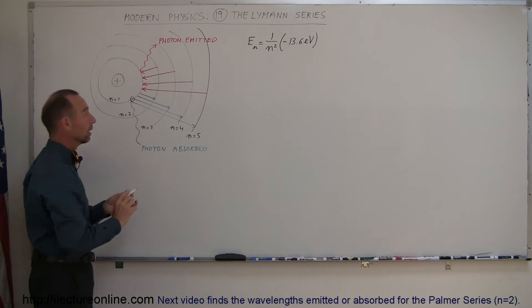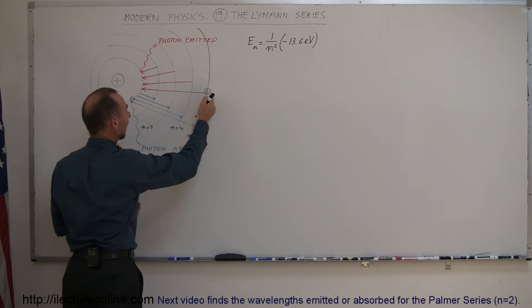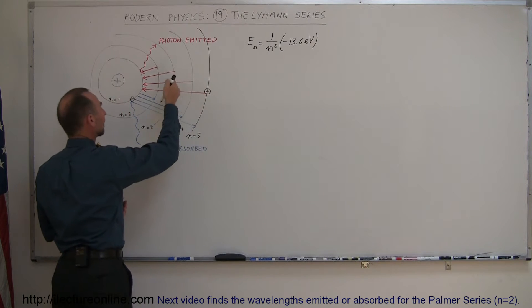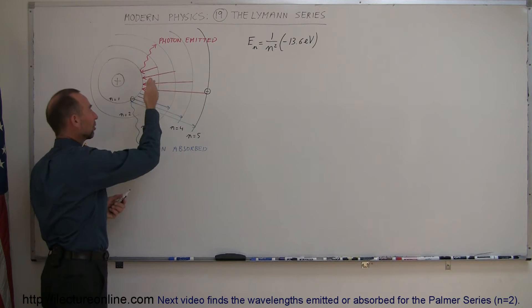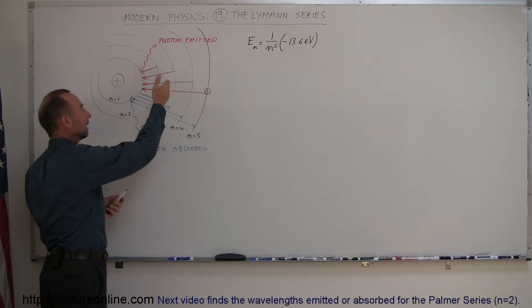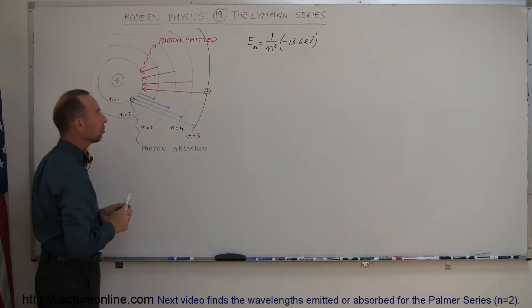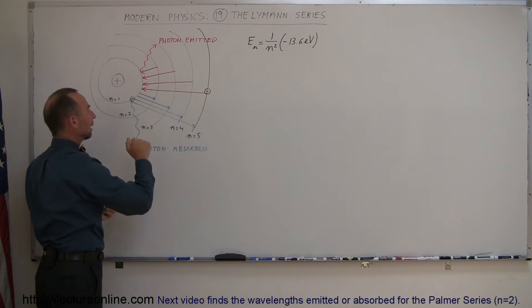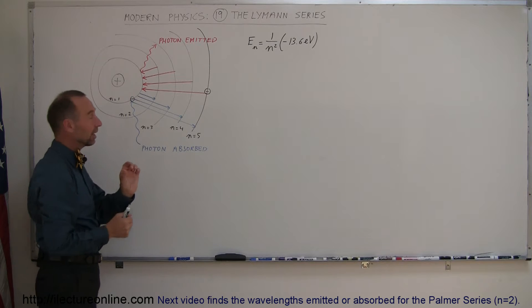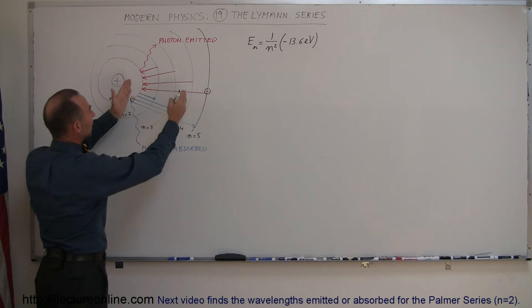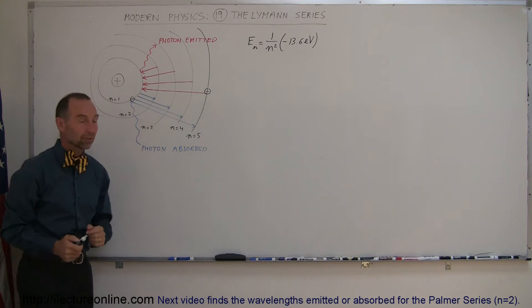Likewise, when an electron is in a higher energy orbit, it can fall back down to a lower energy orbit — all the way down to the first energy level, or in increments, in any combination. But every time it does so, it will emit a photon representing the exact amount of energy difference between those energy levels.